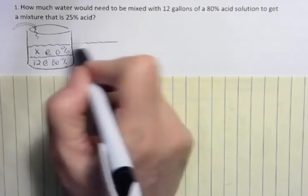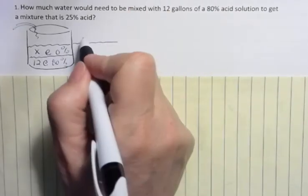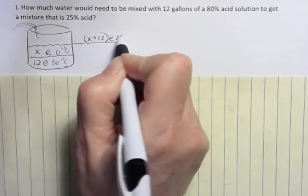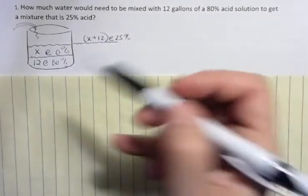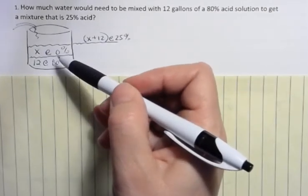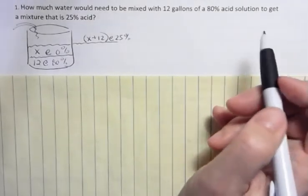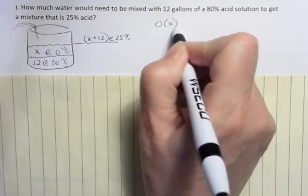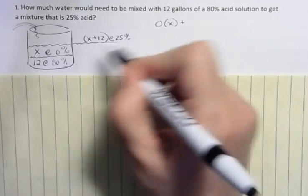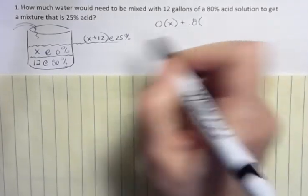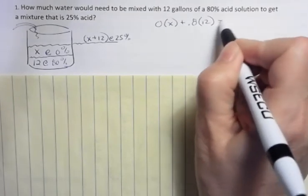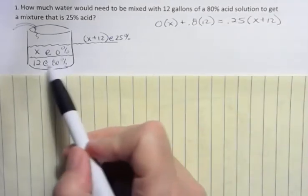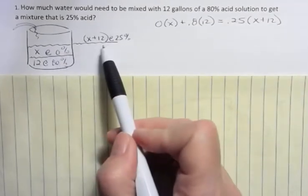How much would we have to add so that that would end up being 25% acid? Well, I'm going to have a total number of gallons in there, we're talking about gallons, of X plus 12. And I want that to be at 25%. So that's what's happening. We have 12 gallons, we're adding X gallons, and we're ending up with a 25% solution. The stuff in the container gets multiplied. I'm going to go ahead and do zero times X, even though you can see that that's going to become zero. And then we're going to take 80% or 0.8 times 12. And that's going to equal 0.25 times X plus 12. We multiply what's inside the container, and that's what equals what's outside the container.